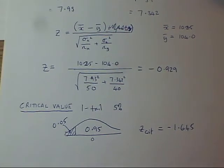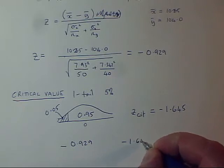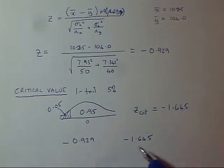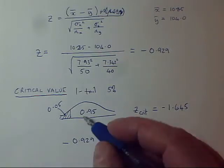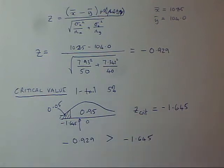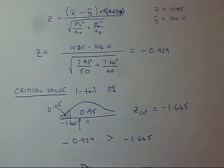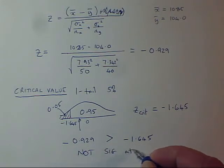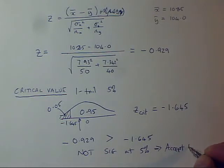Now we're ready for the comparison. I have a test statistic of minus 0.929 and a critical value of minus 1.645. Because these are both negative values, minus 0.929 is actually greater than minus 1.645. On the diagram, minus 1.645 is the critical boundary and minus 0.929 falls in the large unshaded uninteresting region — not in the critical tail. It's only the lower tail of the distribution that is significant. This is not significant at the 5% level, and therefore we accept the null hypothesis.